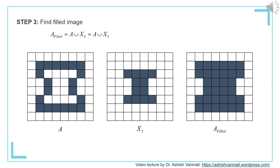Now we perform the last step: find the final filled image. A_filled is given as A union X_K, which in this case is A union X_5. You can see A in the first figure, X_5 in the second figure, and the filled image (the union of the two) is shown in the third figure. The algorithm started with X_0 somewhere around the center. I advise students to take some other starting point, perform the region filling algorithm, and identify how the number of iterations changes when the point is not at the center of the region to be filled.